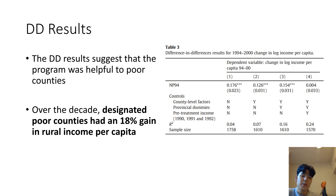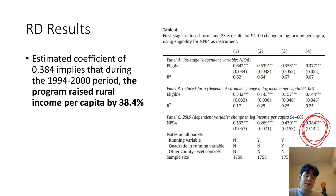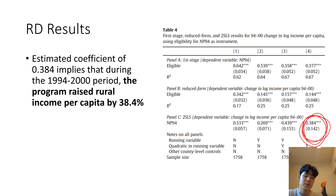The difference-in-differences results suggest that the program was helpful to poor counties. Over the decade, the designated poor counties that had received treatment saw an 80 percent gain in rural income per capita. The regression discontinuity results actually show that the program was even more significant and had a much more positive impact. The coefficient of 0.384 in this column here shows that the program raised rural income per capita by 38.4 percent.